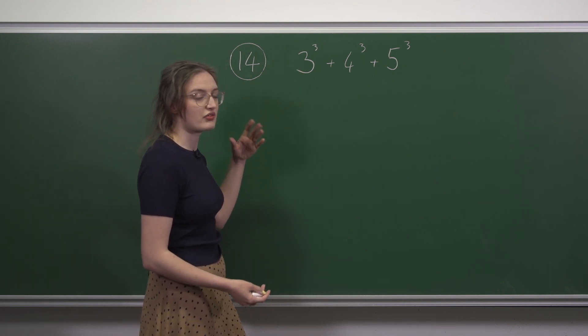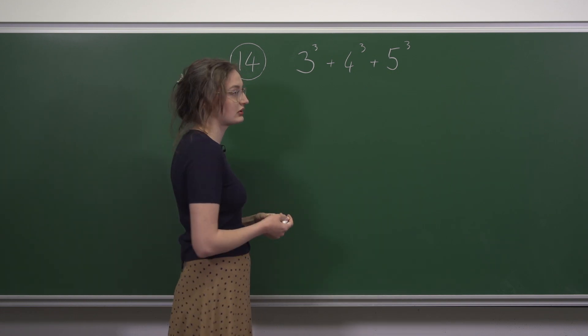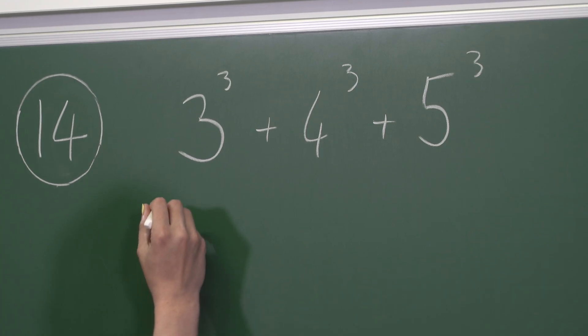3 cubed, 3 times 3 times 3 is 9 times 3 is 27.